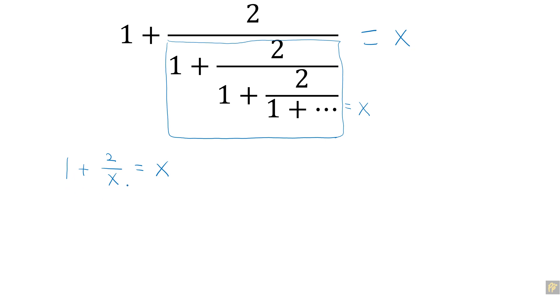To solve for the given expression x, what you can do is multiply by x on the left hand side as well as the right hand side. So left hand side can be x plus 2 equal to x squared.